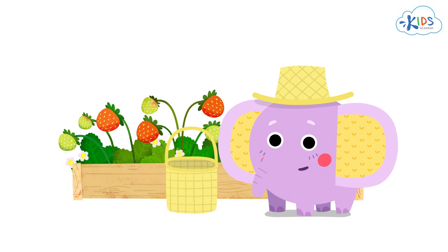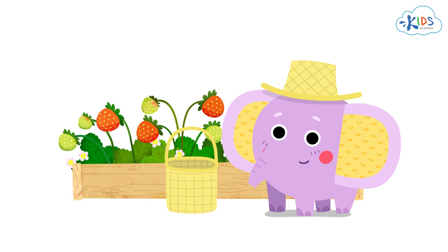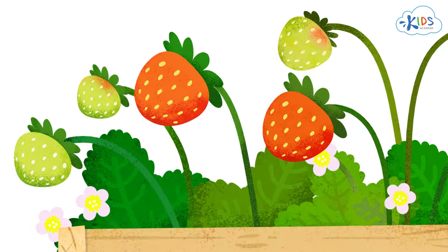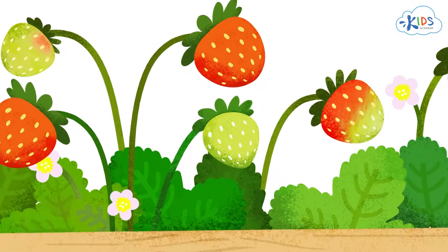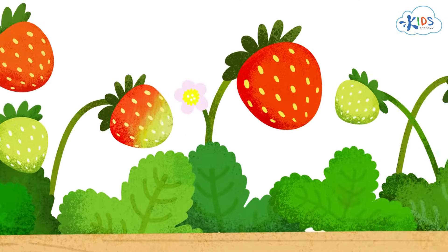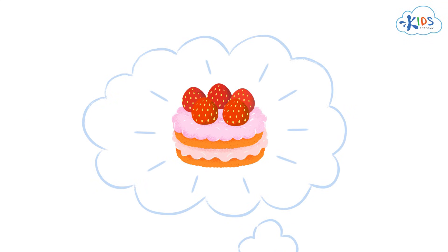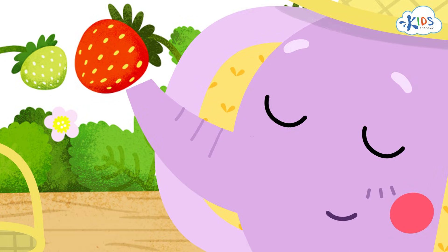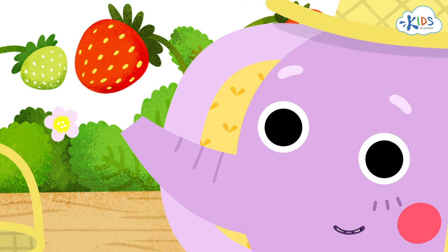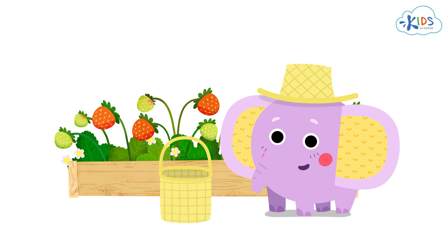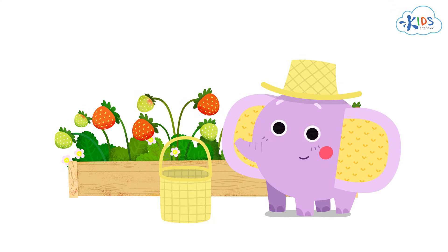I need to pick some berries for dessert and vegetables for a stew. There are different berries here. How do I know which ones are ripe? Think of berries that are usually served for dessert. They are bright red and smell delicious. I'll only pick the red berries that smell yummy.